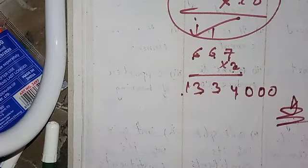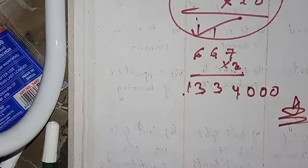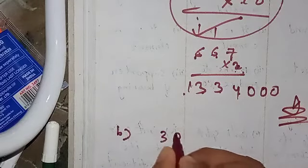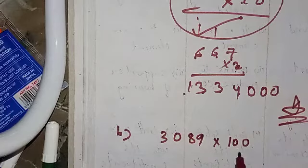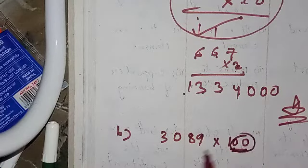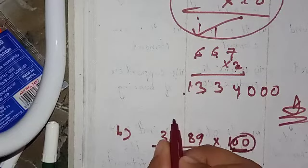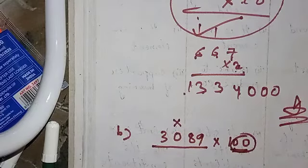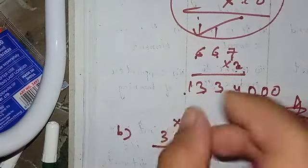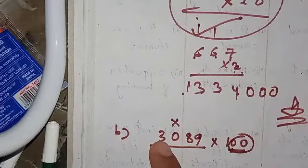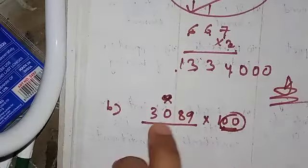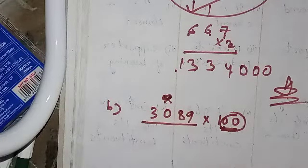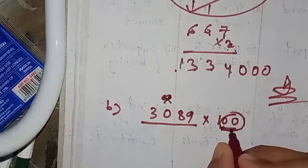Similarly, for part b: 3089 × 100. You can see that 100 has two zeros as its last digits. Note: you cannot remove zeros from the middle of a number — only trailing zeros can be set aside. For example, the zero inside 3089 cannot be removed because it sits between two digits.